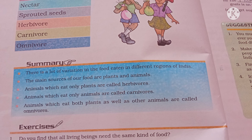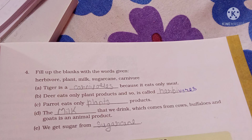Now let's match the column — match the items in Column A with Column B. Milk gives us paneer and kheer. Carnivores eat plants and plant products — so fill in the blanks: tiger is a carnivore because it eats only meat. Deer and hare are herbivores as they eat only plant products. Parrot eats only plant products.